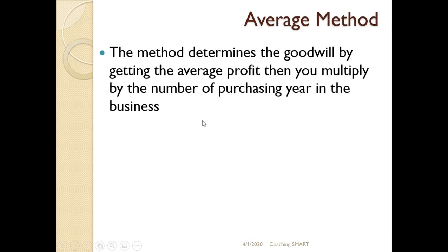We start with the first method, which is the average method. In the average method, the method determines the goodwill by getting the average profit, then you multiply by the number of purchasing years. So you get the average profit for the business after you've been given the profit over a given period of time, then multiply the average profit by the purchasing years — how many years is the product supposed to be in the market, whether three, five, or ten years. From there you can establish the goodwill of the business.